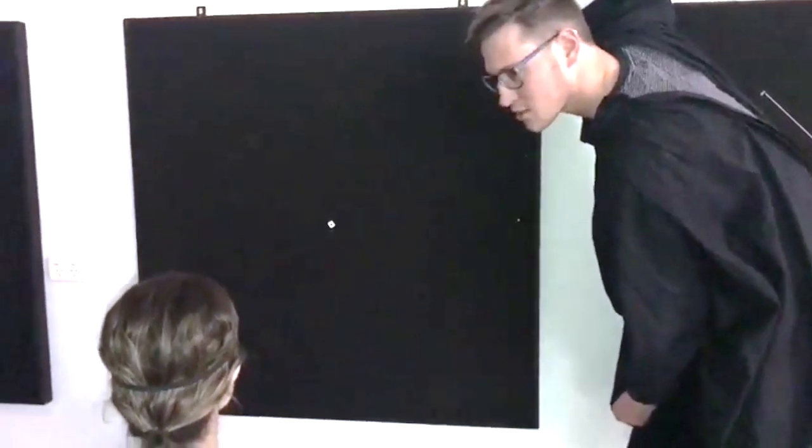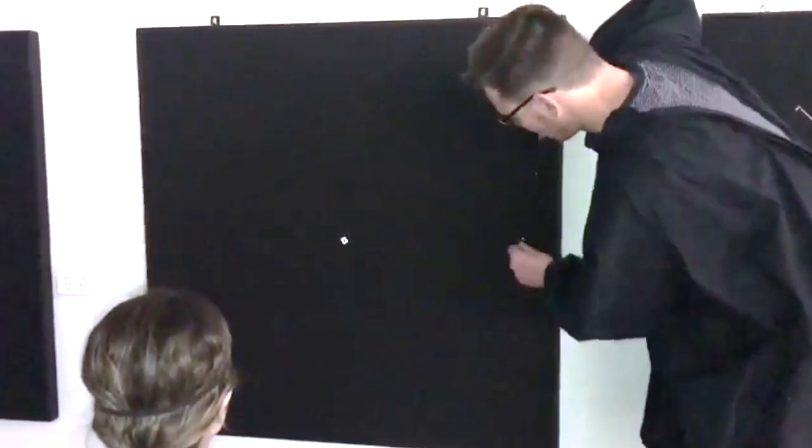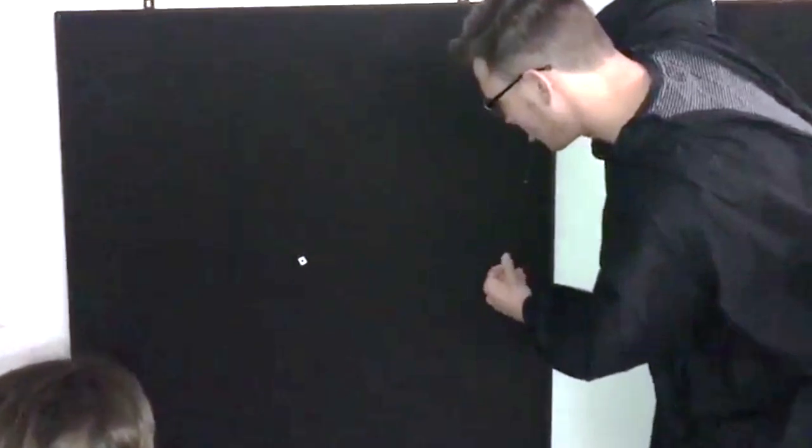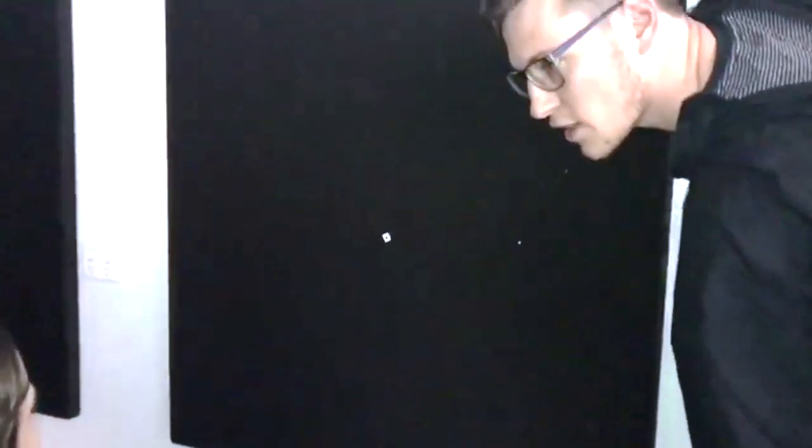When mapping out the blind spot, the examiner will ask the patient when the stimulus first disappears. The patient is asked to let them know when the white dot first disappears. Patient responds that it has disappeared and they cannot see the white dot or anything.